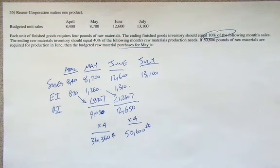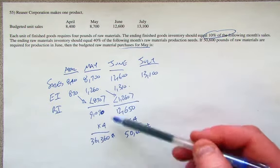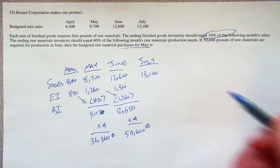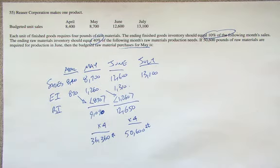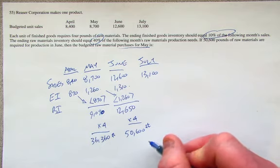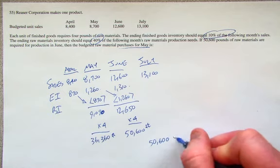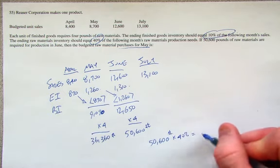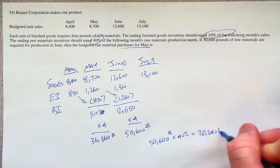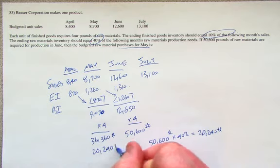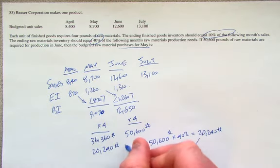Now we're getting really close to the end of the problem, but what we also have to do is take a look here and say, what are the budgeted raw material purchases for the month of May? We can certainly start with this 36,360, but then we see that ending inventory should be 40% of the following month's raw material purchases. So if we take June's purchases of 50,600, 40% of that is 20,240 pounds.